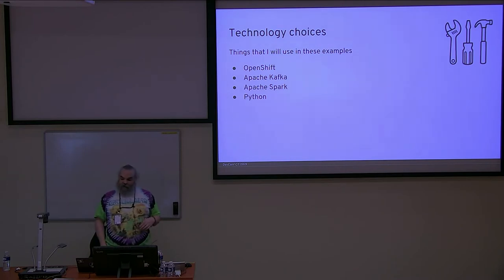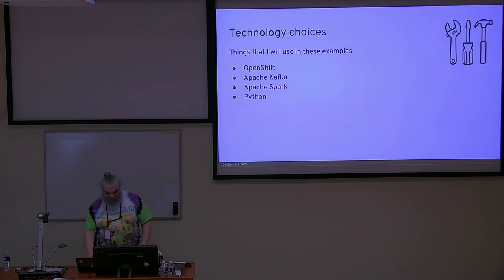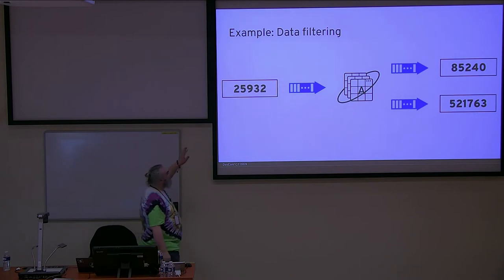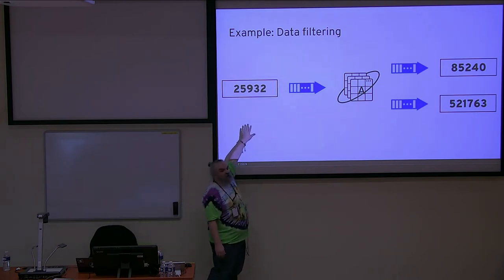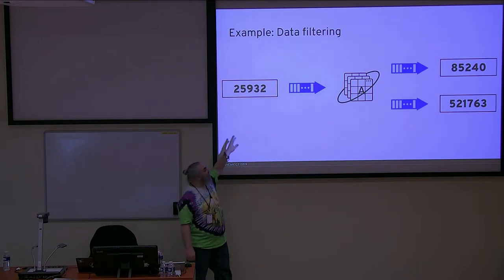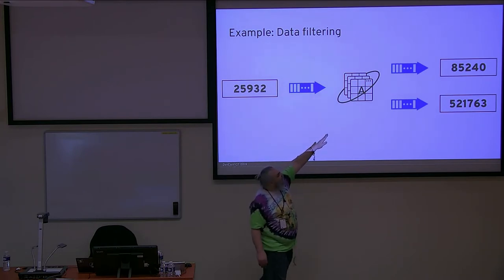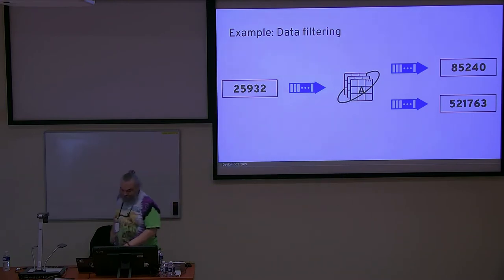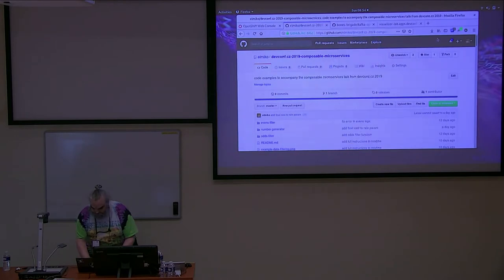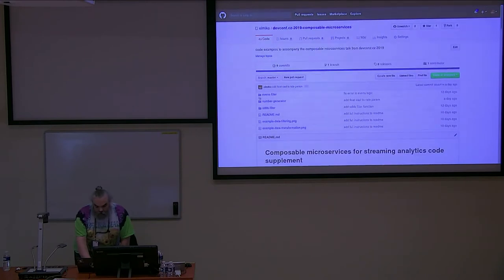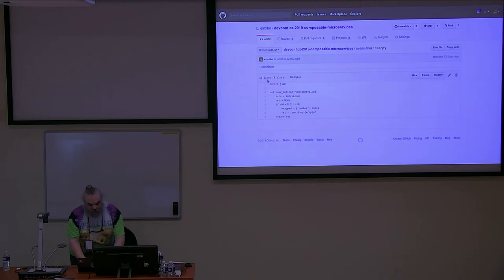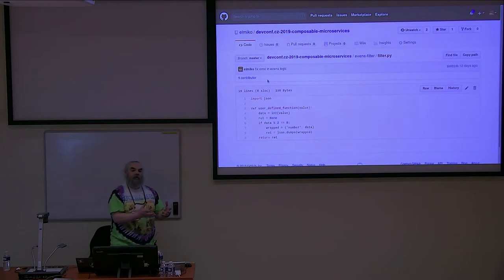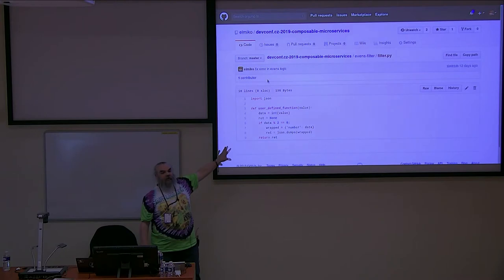This is the first example we'll dive into. Our data stream is going to be a series of random numbers — this is similar to the mean example Rui was talking about. We're going to have a filtering application that will either filter out all the even numbers or filter out all the odd numbers and play those onto a second topic. I'll show you the filter function I'm going to use. There's a wrapper application doing the Spark interaction, but at the core is this function applied to everything coming across the stream.